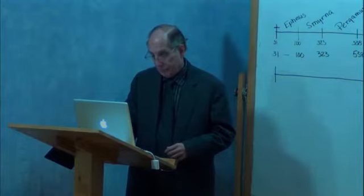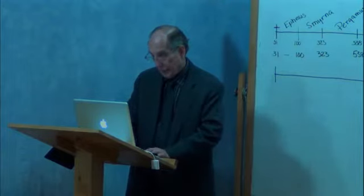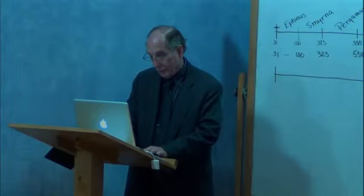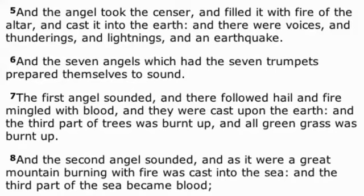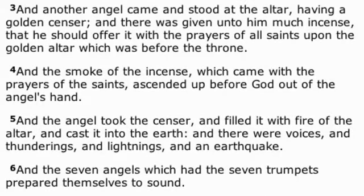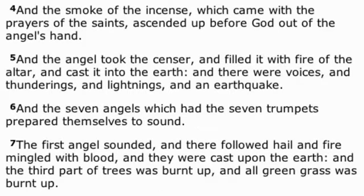Revelation 7? Revelation 8. 3, 4, 5, and 6. Yeah, we just talked about that, but now let's read it. And another angel came and stood at the altar, having a golden censer. And it was given unto him much incense, that he should offer it with the prayers of all the saints upon the golden altar, which was before the throne. And the smoke of the incense, which came with the prayers of the saints, ascended up before God out of the angel's hand. And the angel took the censer and filled it with the fire of the altar and cast it into the earth. And there were voices and thunderings and lightnings and an earthquake. And the seven angels, which had the seven trumpets, prepared themselves to sound.